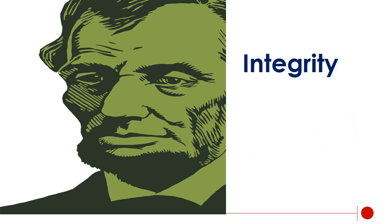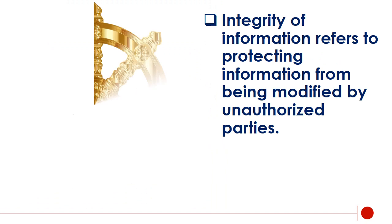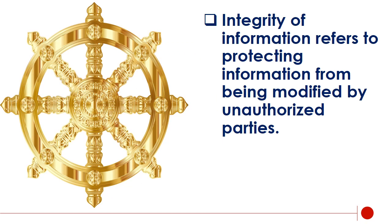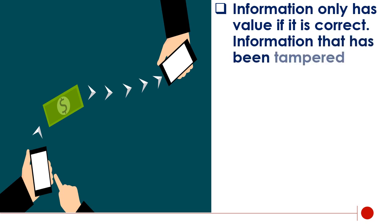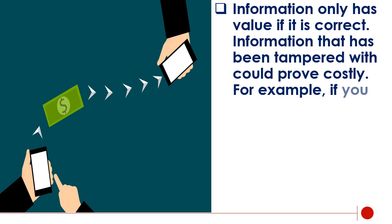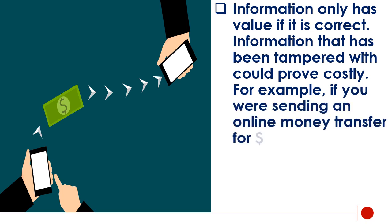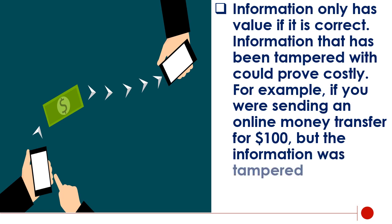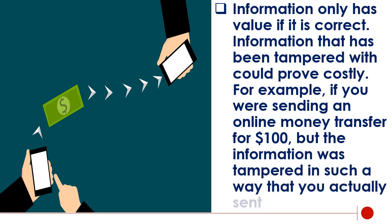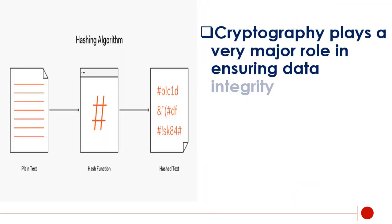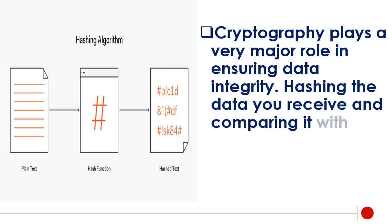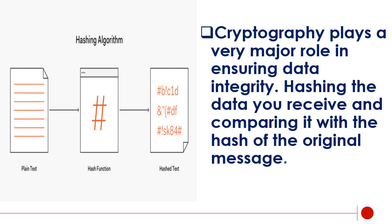Integrity. Integrity of information refers to protecting information from being modified by unauthorized parties. Information only has value if it is correct, and information that has been tampered with could prove costly. For example, if you were sending an online money transfer for $100 but the information was tampered with in such a way that you actually sent $10,000, it could prove to be very costly. Cryptography plays a very major role in ensuring data integrity, by hashing the data you receive and comparing it with the hash of the original message. However, this means that the hash of the original data must be provided to you in a secure fashion.